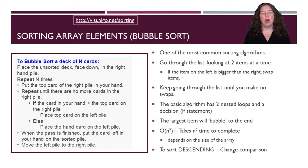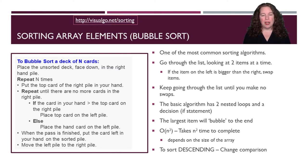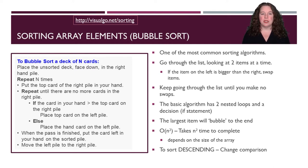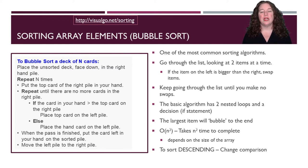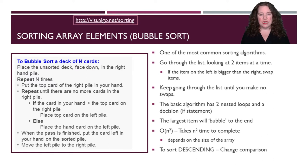Bubble sort is one of the more common sorting algorithms. The way we do bubble sort is we look through the list two items at a time. Imagine you have a deck of cards in your hand — take an unsorted deck face down on the right-hand side. We're going to pull two items out, one in my left hand and one in my right hand. If the number in my left hand is bigger than the number in my right hand, switch cards. Then put down the one in my left hand and pick up a new card.